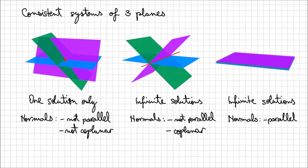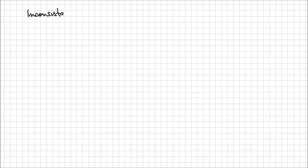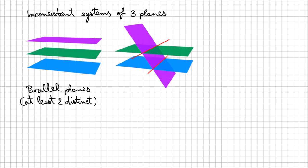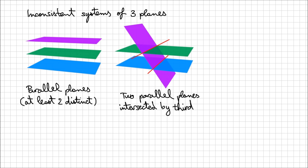These are all the possible situations for consistent systems of three planes. Let's look at all possible situations for inconsistent systems of three planes. First, you may have situations when planes are parallel — if you have at least two distinct parallel planes, then the system of these three planes is going to be inconsistent, because even if two of them are coincident, there is no solution that belongs to all three. Another situation for inconsistent systems is when you have two parallel planes intersected by a third plane. In this case, you have pairs of intersections that have an entire line of intersection, but overall all three planes don't even have one single point in common. Therefore, the system is inconsistent again.